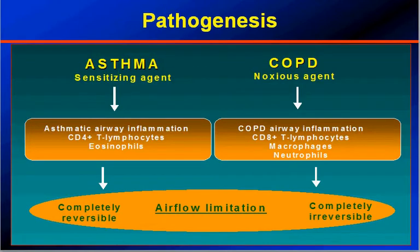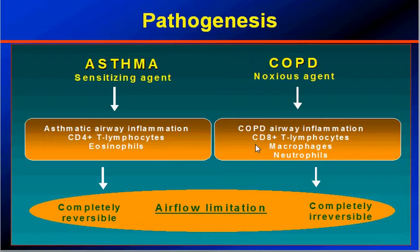In the contrasting features of pathogenesis: in asthma, the trigger is a sensitizing agent such as house dust, pollen, pets, or chemicals, or innate atopy in the individual. In COPD, it is a noxious agent — usually cigarette smoke, biofuel gases, or industrial exposure. Asthmatic airway inflammation is mediated by CD4 T-lymphocytes, with eosinophils predominating and mast cells present. Whereas in COPD, airway inflammation is mediated by CD8, with macrophages playing the major role and neutrophils predominating. The effect is completely reversible in asthma, but completely irreversible in COPD, where airflow limitation occurs. There is an overlap between asthma and COPD.